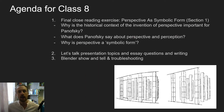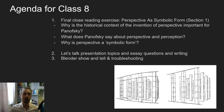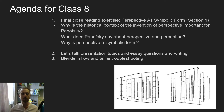So the agenda for this week: in class we're going to do our third and final close reading exercise. As a group we're going to look at section one from a book called Perspective as Symbolic Form by Erwin Panofsky, a very famous art historian. We'll ask questions such as what is the historical context of the invention of perspective, what Panofsky says about perspective and perception, and why he calls perspective a symbolic form. We'll also chat about presentation topics and essay questions, and as usual I'll try to make some time for Blender Show and Tell and troubleshooting.